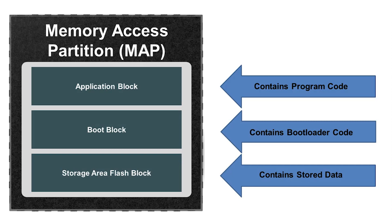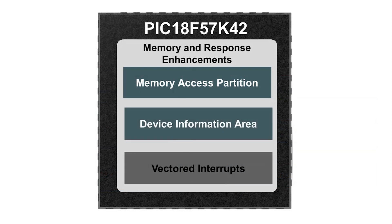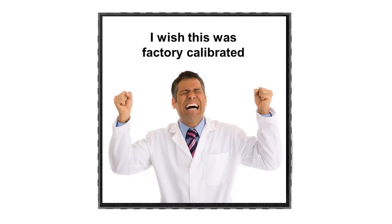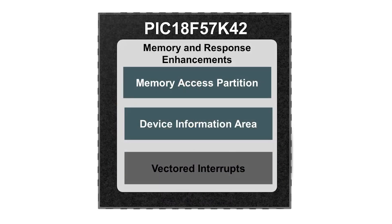These new partitions add an additional layer of protection to your code and data by making accidental memory overwrites more difficult. This PIC microcontroller features a Device Information Area, or DIA, which is a dedicated region of program memory space that contains things like the unique identifier, which can be very useful in applications involving IoT. Additionally, this area contains the calibration data for the internal temperature sensor indicator module. With previous PIC MCUs, temperature sensor calibration was to be done by the user. However, with the PIC 18F57K42, these calibrations have already been done for you so that development time is greatly decreased.